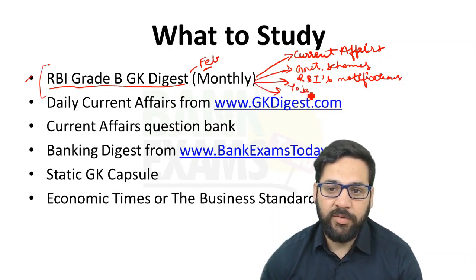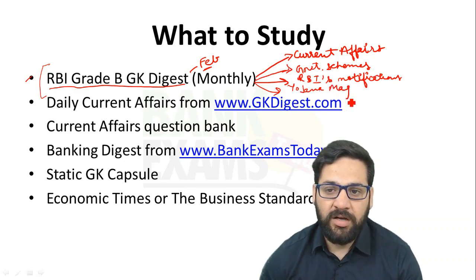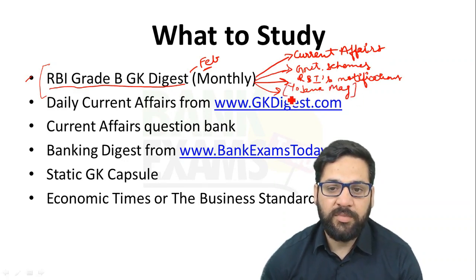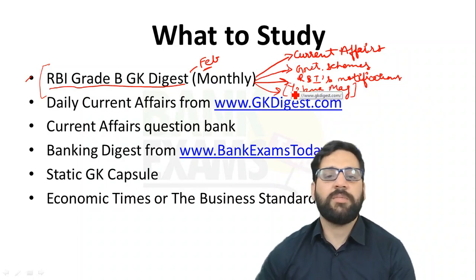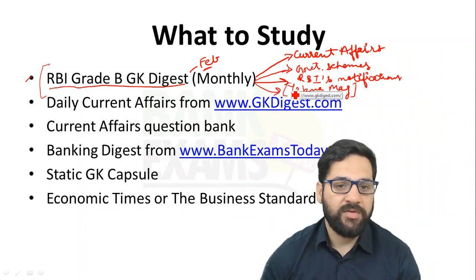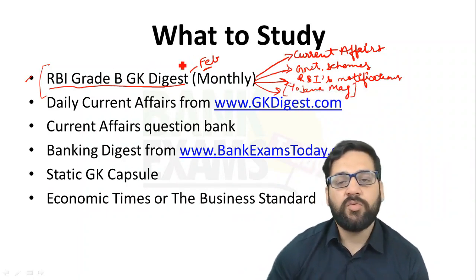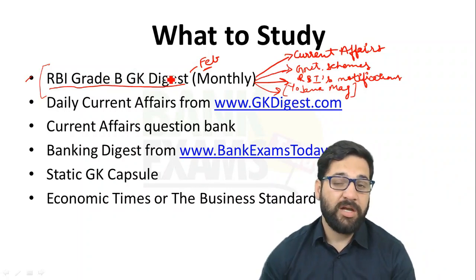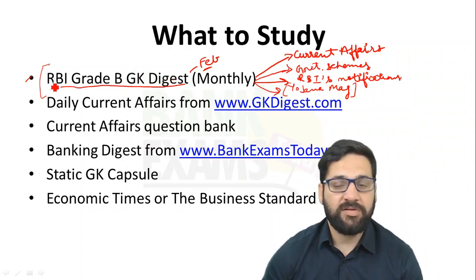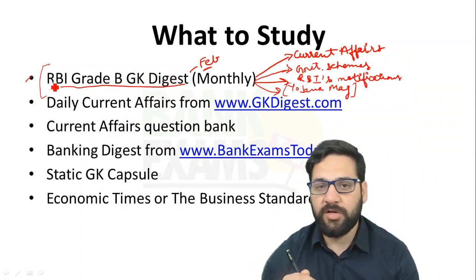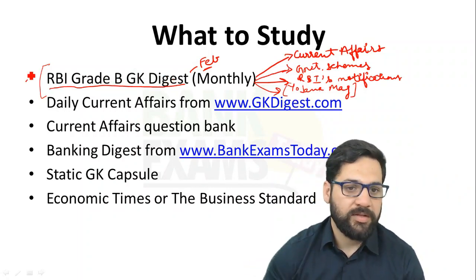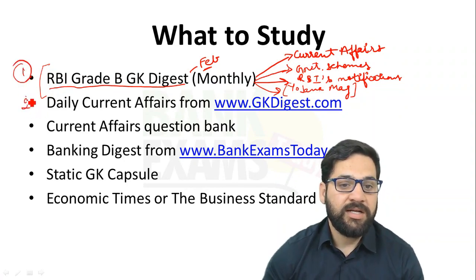You can directly buy the Yojana magazine or you can read the summary of Yojana magazine within the RBI Grade B GK Digest. Links to the previous three months of RBI Grade B GK Digest are available in the description — go there and download. This is the first thing you need to study.